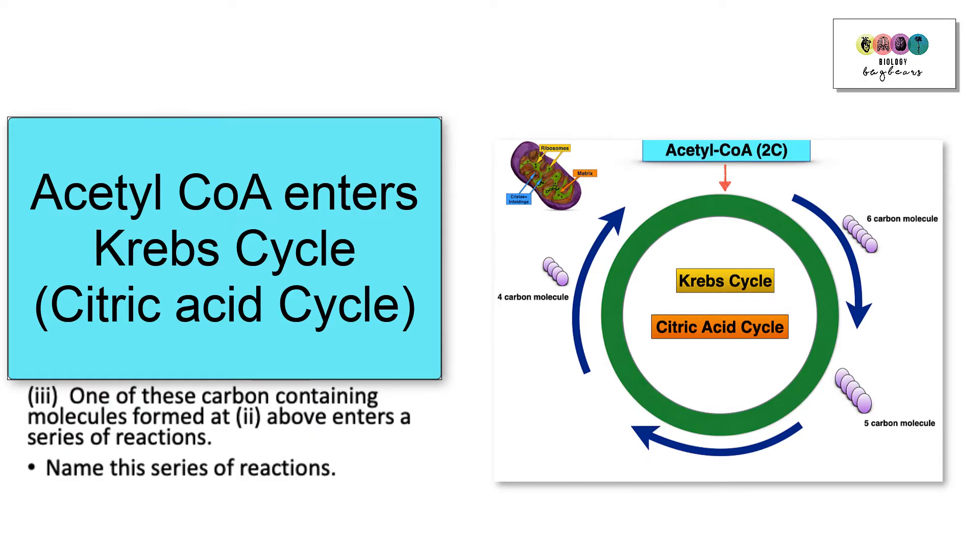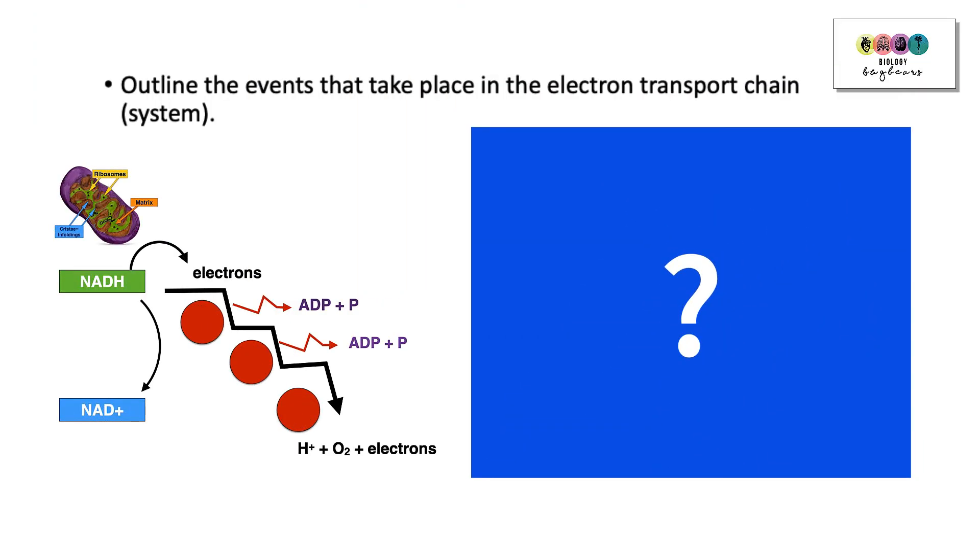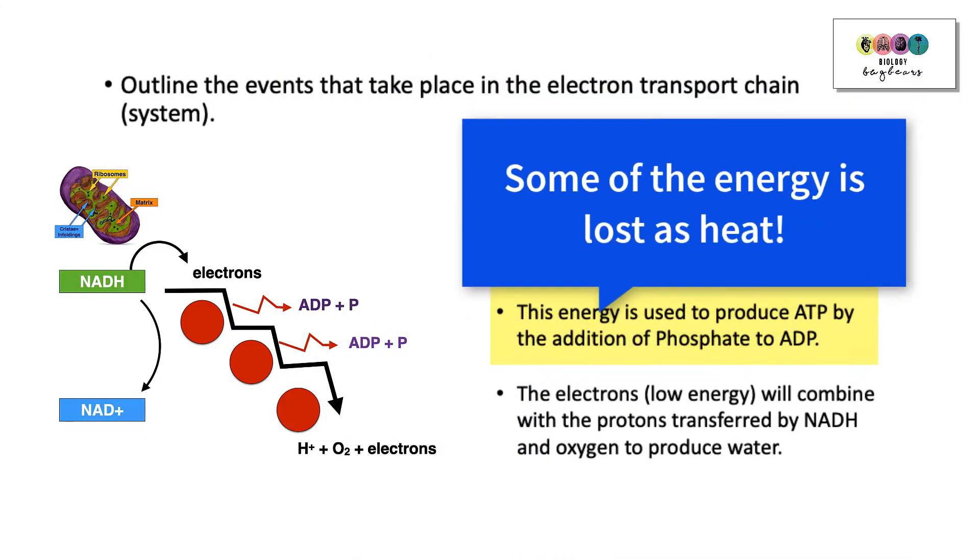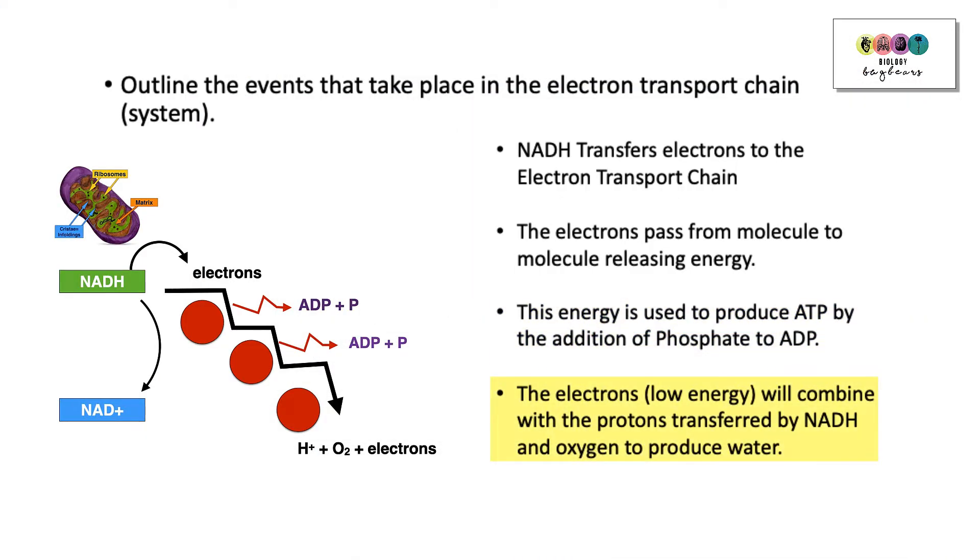Next part of the question: Outline the events that take place in the electron transport chain or system. Think in bullet points to make it easy for yourself. Firstly, NADH transfers the electrons to the electron transport chain. The electrons will then pass from molecule to molecule releasing energy. Some of that energy is used to make ATP. ATP is made by the addition of a phosphate, adding a phosphate onto ADP. Some of the energy is lost as heat. At the end of the electron transport chain, the electrons will then combine with protons, transferred also by NADH, and oxygen to produce water.